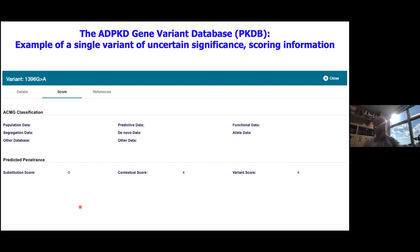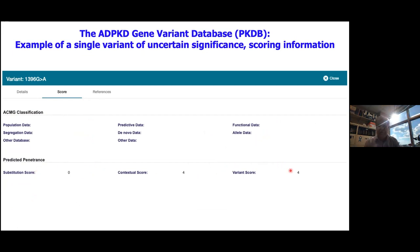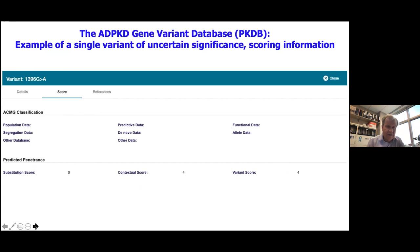We're also working on implementing the American College of Medical Genetics classification system in the database — determining which group each variant fits into and what supporting pieces of information come with that. This complements the other scoring system we've been using to determine whether a variant is pathogenic and how penetrant it might be.